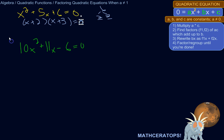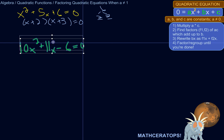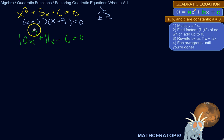But what if you have something like this? 10x squared plus 11x minus 6 equals 0. And you can't pull a trick like dividing the whole thing by 10 so that a is 1, because then you'll have, this will be 11 tenths, and that just gets messy. So what do you do?